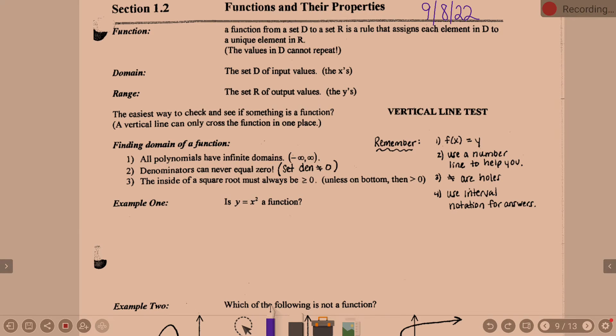Now, functions, domain, range, all these words you've been hearing since algebra one. We've just got to put them all back together. So a function from a set D to a set R is a rule that assigns each element in D to a unique element in R. That's your official mathematical definition.